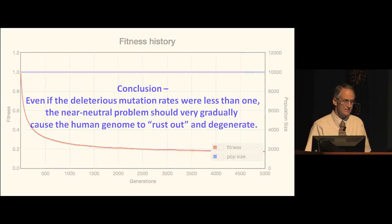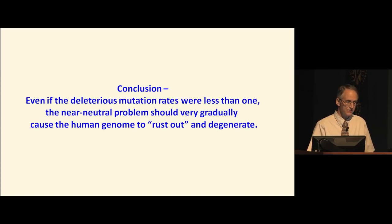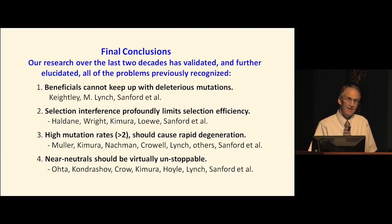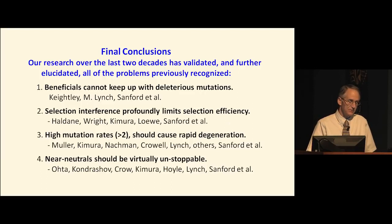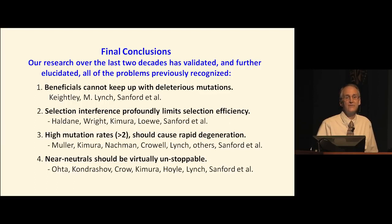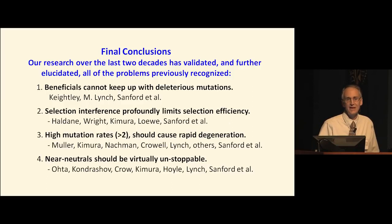Our research over the last almost two decades has validated and further elucidated all of the problems already well-known within the field of population genetics. In summary: beneficial mutations cannot keep up with deleterious mutations; selection interference profoundly limits selection efficiency; high mutation rates above 2 should cause rapid degeneration; and the near-neutral problem is virtually unstoppable. This is consistent with the history of population genetics starting from the founders of neo-Darwinian theory. All the population geneticists who have carefully examined these issues have been troubled by how to stop mutation accumulation.